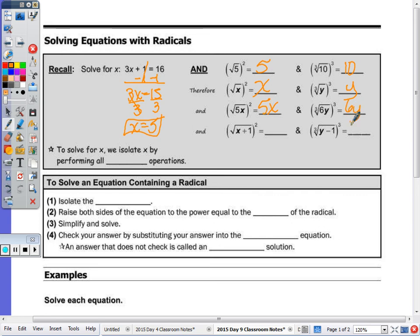That's because taking the square root and squaring are inverse operations. So the square essentially removes the symbol. So it cancels out the square root. We're left with x plus 1. Cube root and cubing are inverse operations. So if it was to the fourth root, what power would I have to raise it to to remove the radical symbol? The fourth. And same with the fifth. So this is just y minus 1. So to solve for x, we isolate x by performing all inverse operations.